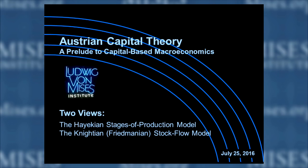I'm going to start with two views. There's the Hayekian stages of production model — you've already seen a lot about that from Professor Salerno, I might give a little different spin on it. And then the Knightian, and in parenthesis I say Friedmanian, stock-flow model. That's the alternative as far as looking at Hayek and Friedman is concerned, so we'll try to give that a pretty good workout.